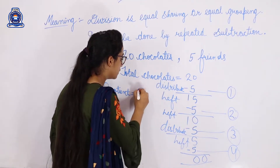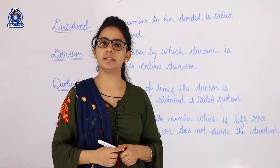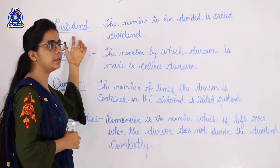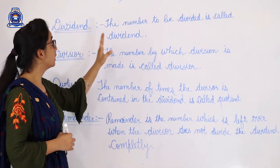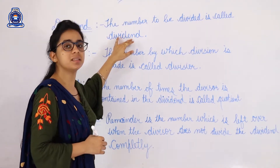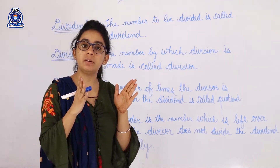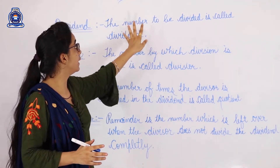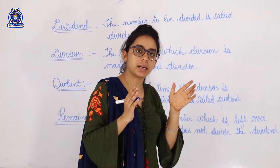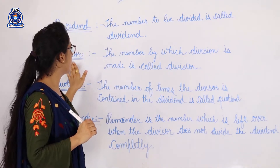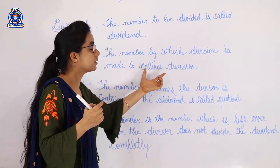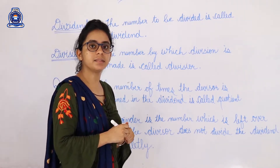Now let's discuss the important terms used in division: quotient, remainder, dividend, and divisor. The first term is dividend — the number to be divided is called the dividend. The second term is divisor — the number by which division is made is called the divisor. Let's take an example.